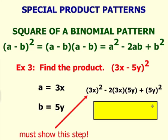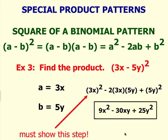When you simplify this expression, your final answer is 9x squared minus 30xy plus 25y squared. We'll see you next time.